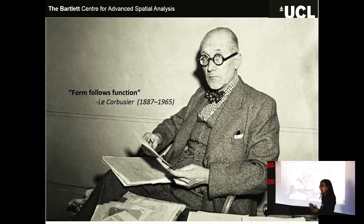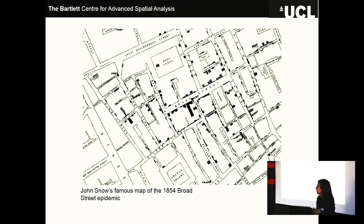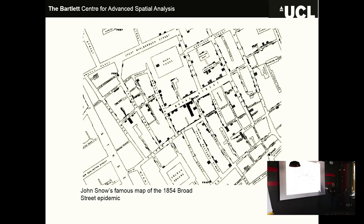What we do is we try to find these underlying patterns using different methods to understand how the city works. You probably know John Snow's quite famous map — in 1854, he mapped the cholera outbreak in London. This is a very famous example of spatial analysis. What he did is he noticed a correlation between the cholera outbreaks and places where there were water sources like wells or pumps. He mapped all the wells and pumps in the city, mapped all the cholera incidents, and realized there was a correlation. That was one of the first examples of spatial analysis.